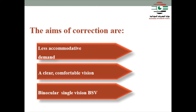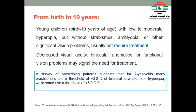There are groups for correction of hypermetropia when writing an Rx, divided according to the American Optometry guidelines from birth to 10 years. Young children with low to moderate hypermetropia but without strabismus, without amblyopia, and no significant vision problems usually do not require treatment. Decreased visual acuity or functional vision problems may signal the need for treatment. For two-year-olds, many practitioners use a threshold of three diopters of bilateral asymptomatic hypermetropia, while some use five diopters.